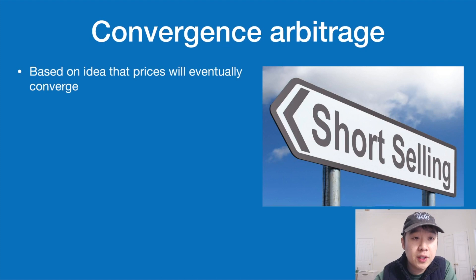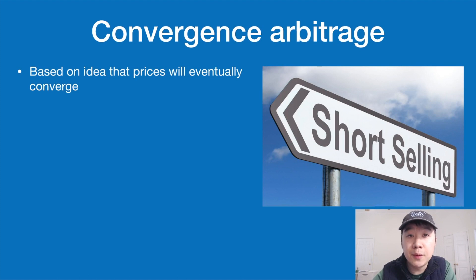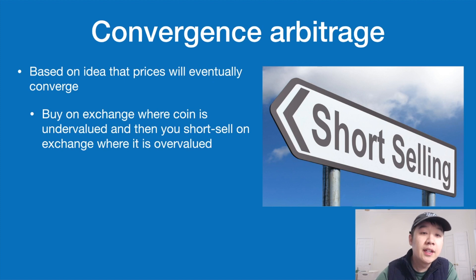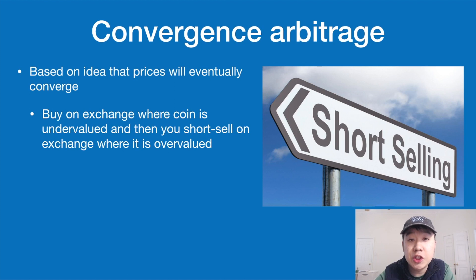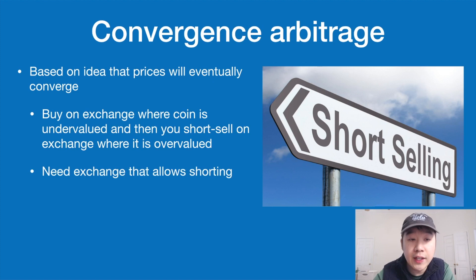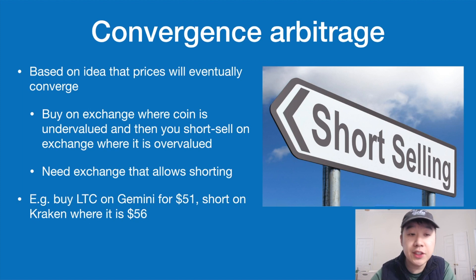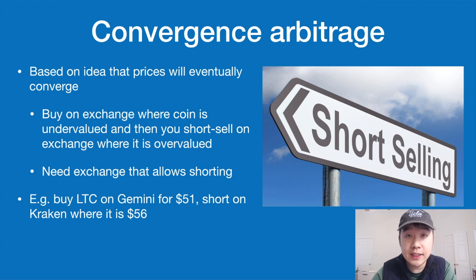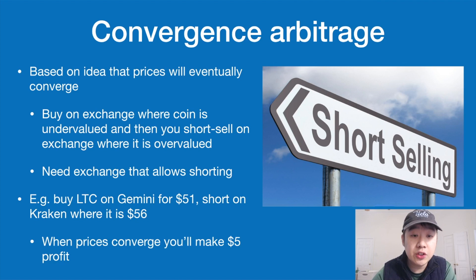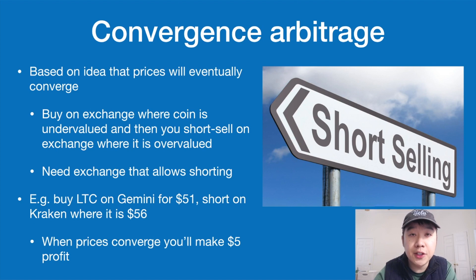Convergence arbitrage is based on the idea that when there are market inefficiencies, prices will eventually converge as people take advantage of those opportunities. You buy a coin on an exchange where it's undervalued and short sell it on an exchange where it's overvalued. For example, buy Litecoin on Gemini for $51 and short it on Kraken where it's $56 — when the prices converge, you've made $5 profit. You'll need an exchange that allows shorting; note that shorting is complicated and not for beginners, so do plenty of research first.